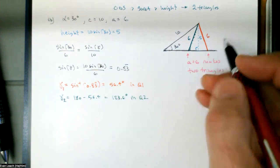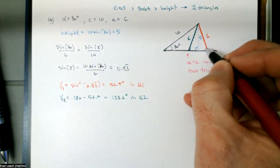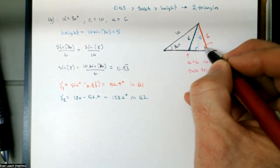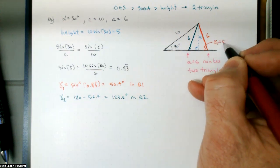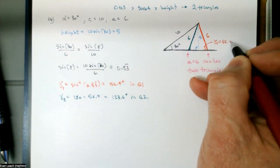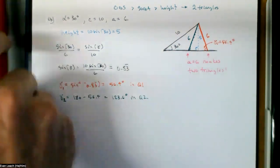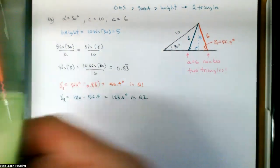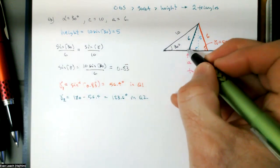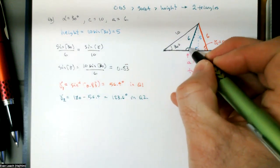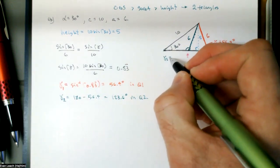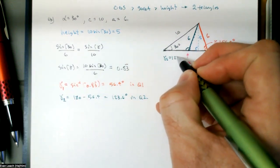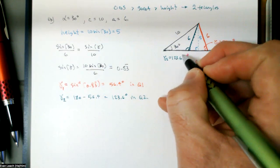Now the problem splits in two — two different values of gamma, one for quadrant 1 and one for quadrant 2. On the picture we've drawn, this gamma is 56.4 degrees and this other gamma is 123.6 degrees.